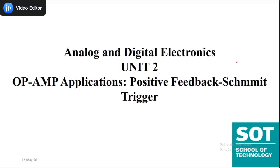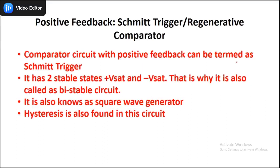Today we are discussing op-amp applications, specifically the use of op-amp as a Schmitt trigger, which uses positive feedback. So far, whatever circuits we have analyzed with op-amp had negative feedback, but this particular circuit — Schmitt trigger or regenerative comparator — uses positive feedback. Whenever we talk about any regenerative device, the op-amp will have positive feedback. The comparators from the previous lecture can be converted to a Schmitt trigger simply by changing the feedback to positive.